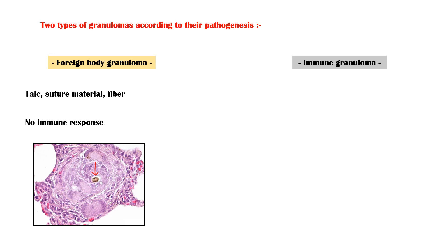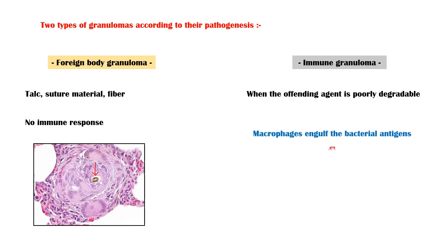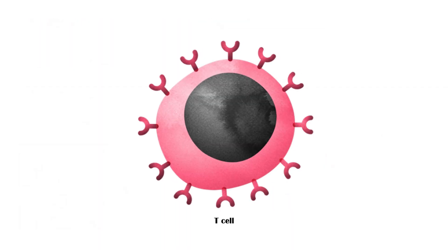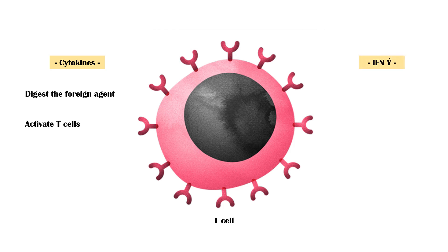Immune granulomas occur when the offending agent is poorly degradable. In this type of granuloma, macrophages engulf the bacterial antigens, process them, and present them to T-lymphocytes. T-lymphocytes in response secrete cytokines, which help digest the foreign agent and activate other lymphocytes. They also secrete more and more gamma interferon, which activates macrophages.